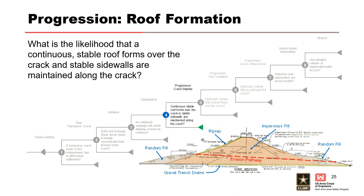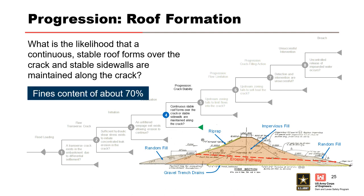Node 4: What is the likelihood that a continuous stable roof forms over the crack and stable sidewalls are maintained? The impervious fill used to construct the homogeneous embankment has an average fines content of about 70%, and the fines have some plasticity, making it virtually certain for the crack to hold a roof and stable sidewalls continuously from upstream to downstream. This is consistent with what was observed in 1949, where leakage and erosion continued until the reservoir elevation was lowered below the erosion tunnels.